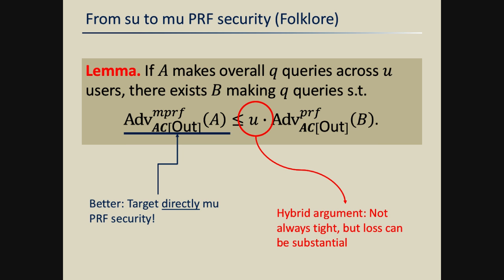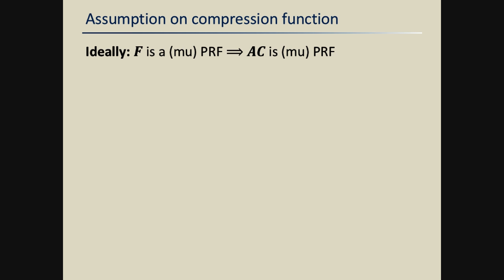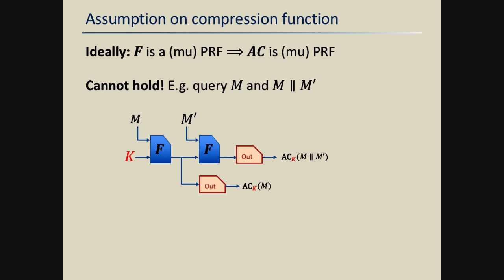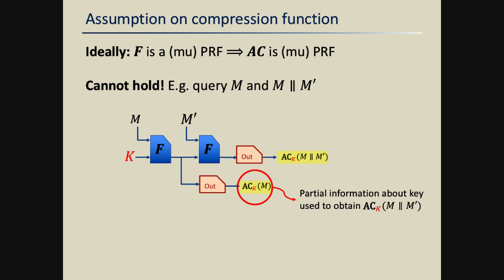Given the target, let's look at the assumption. Ideally, we would like to prove our result only assuming that the underlying compression function is a good pseudorandom function, or maybe a multi-user pseudorandom function. Unfortunately, this is not possible. Consider the situation where the attacker queries one message and then the extension of that message with an additional block. The lower value gives some partial information about the key value used when evaluating F to get the upper value, and you can build a PRF that completely breaks down in this context.